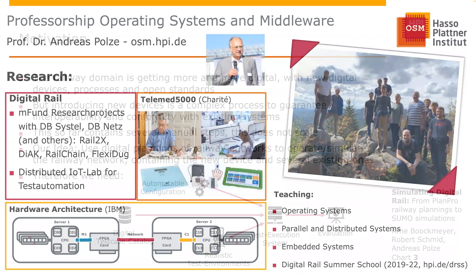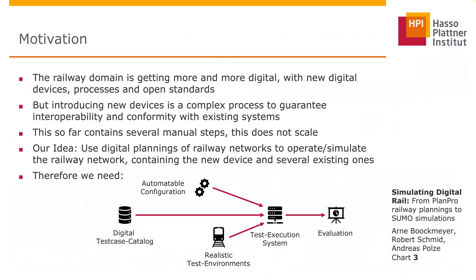In our digital rail department, our current research focus is test automation. The railway domain is getting more and more digital, which means devices, processes, and systems are also becoming more digital. This introduces new complexity, especially when we want to guarantee interoperability and conformity. New standards mean the field of manufacturers is no longer limited to Siemens, Thales, or similar companies — you can mix devices. So the problem of interoperability and conformity tests is getting increasingly important.